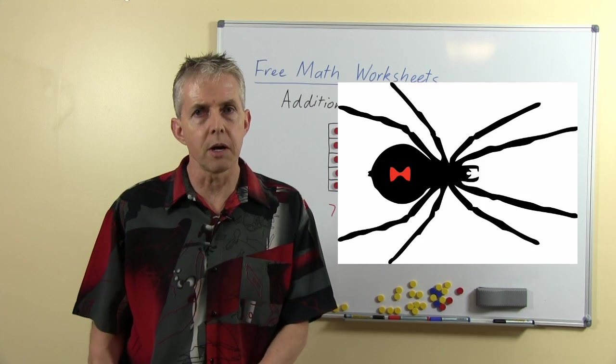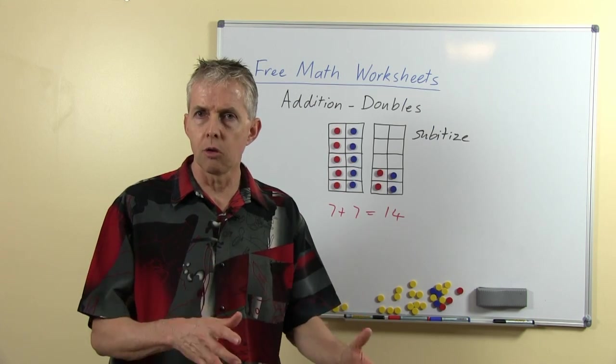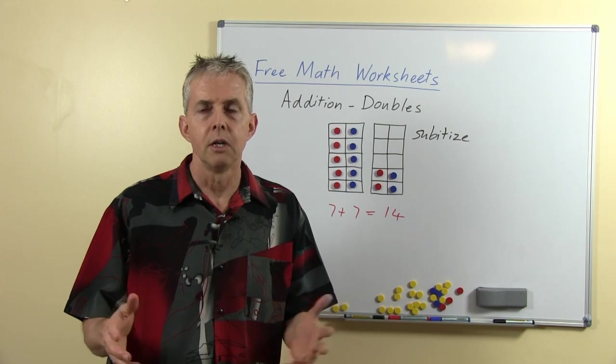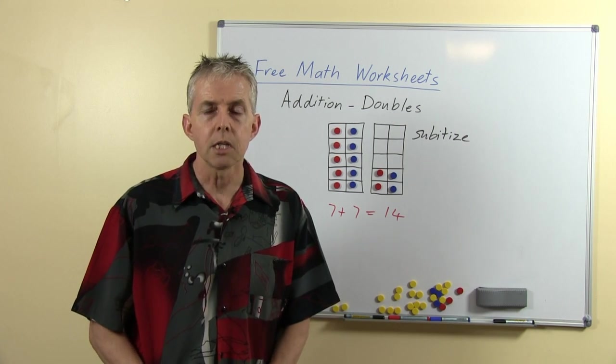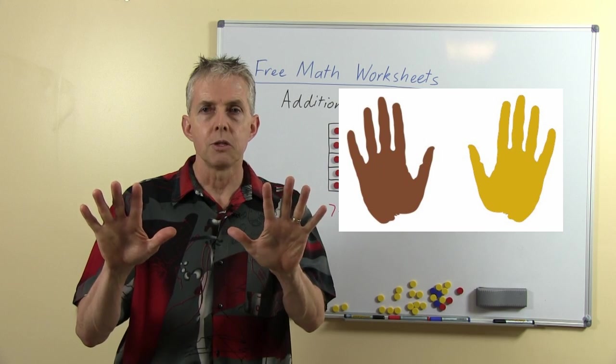Double 4 we can use the legs on a spider. Of course the children have to know that there's a difference between the legs on spiders and insects but they can become familiar with that. Double 5, of course the digits on 2 hands.